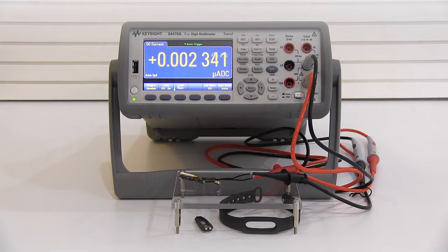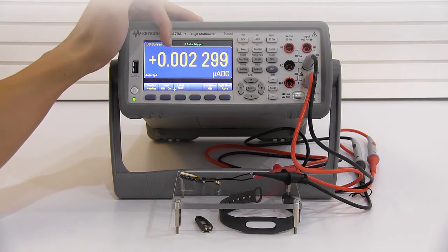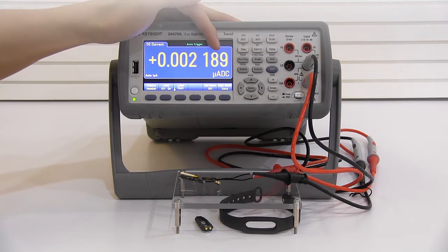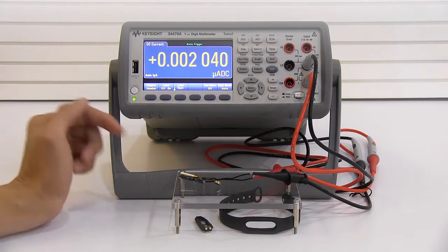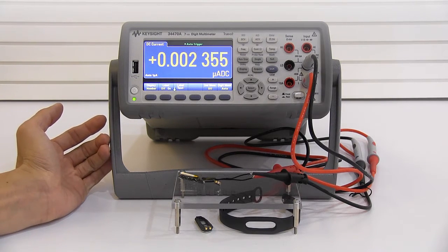So now I have the device in standby mode and the multimeter is actually reading in the microamp range. Over here is the nanoamp and picoamp range. The device is drawing about 2.2 nanoamps current in standby mode.